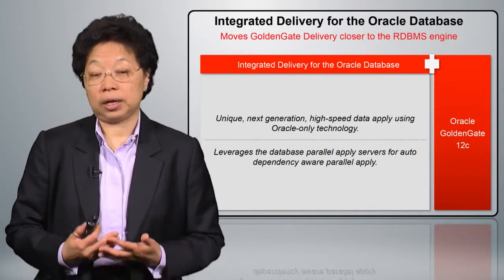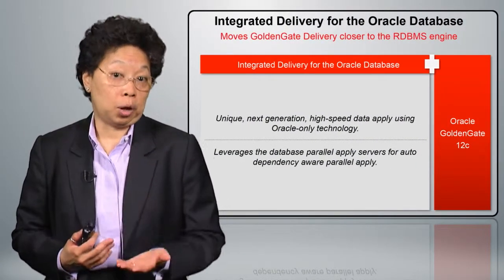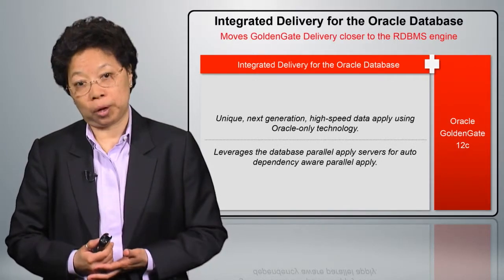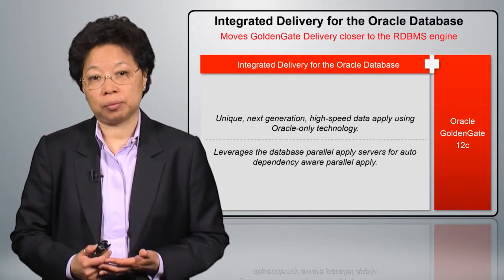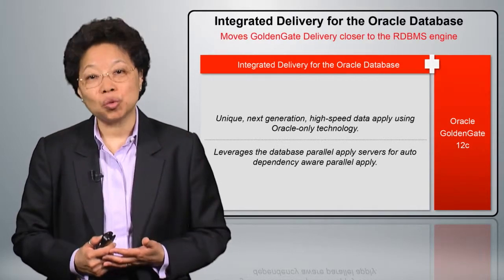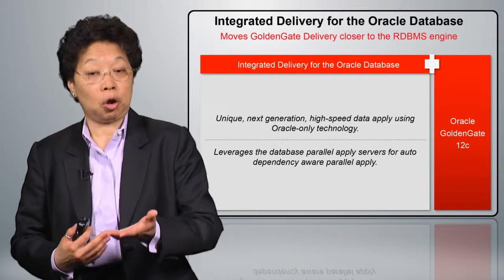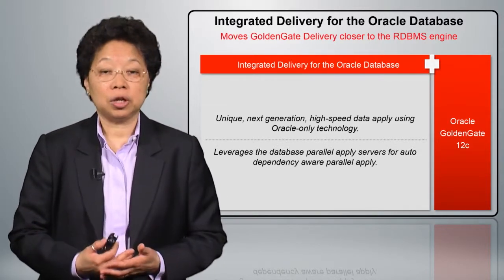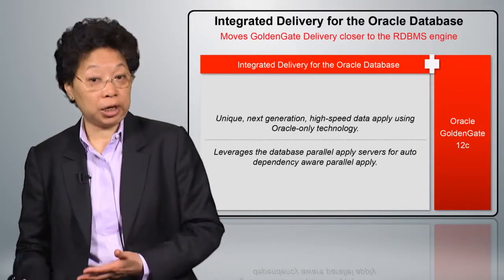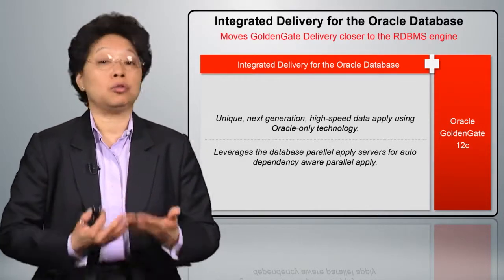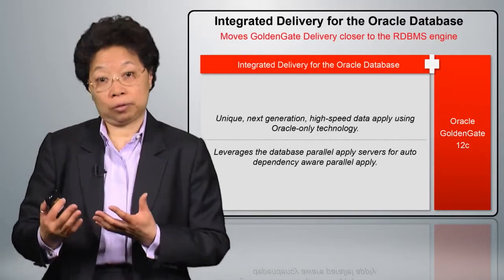What 12C GoldenGate allows is the capability of not just one Replicat, but more than one, especially when you have a huge amount of changes. You technically sort of had this capability even in prior releases — it's called a range. What you did on the target site is take advantage of the range function by associating two or more Replicats to that range.